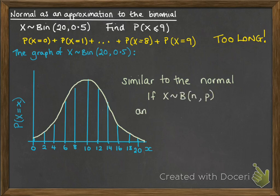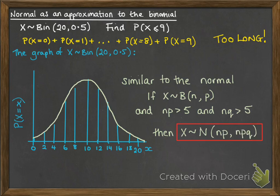So here are the conditions. If x follows the binomial distribution of n and p, and np is greater than 5 and nq is greater than 5 (remember q is just 1 minus p), then we can use the following approximation where we can approximate it to the normal distribution where the mean will be np and the standard deviation will be npq.